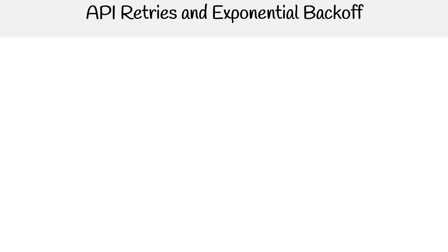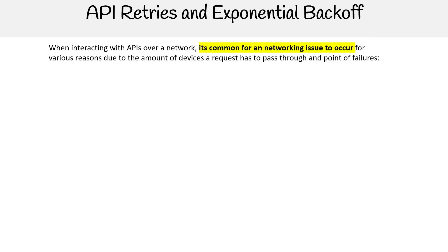Let's talk about API retries and exponential backoff. When interacting with APIs over a network, it's common for networking issues to occur for various reasons — due to the number of devices a request has to pass through and points of failure. You can have issues with DNS servers, switches, load balancers, gateways — there are all sorts of networking things that can happen.